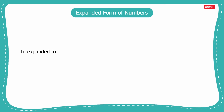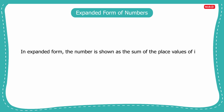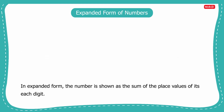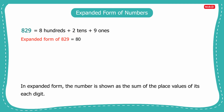Hey kids, let us now learn about expanded form of numbers. In expanded form, the number is shown as a sum of the place values of each digit. Let us understand this with an example. The number 829 can be written as 8 hundreds plus 2 tens plus 9 ones. So, the expanded form of 829 is 800 plus 20 plus 9.